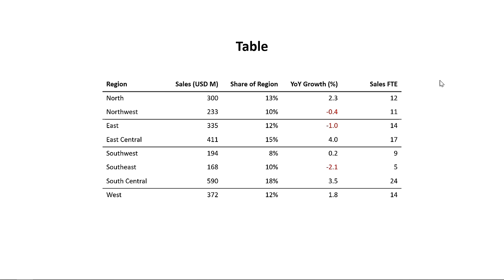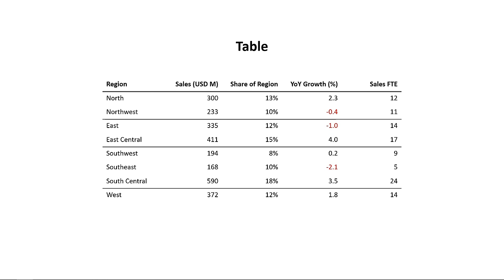In addition to these core chart types, there are additional ways to visualize your data — and one in particular I want to talk about is tables. Tables can be especially good for two reasons. The first is when you need to show precise values. Here we have a basic table showing sales for different regions with additional metrics like share, growth, and number of full-time employees. A table works well if your message calls out a specific data point, like negative 1% growth year over year in the East region.